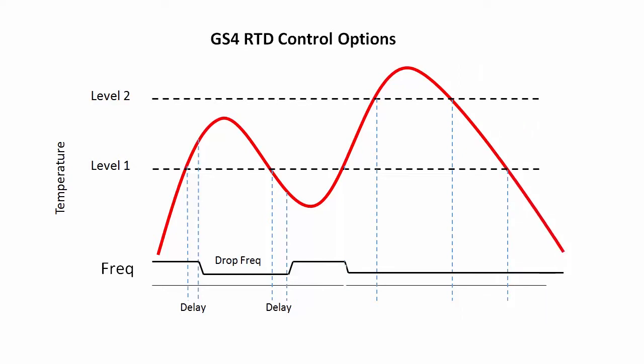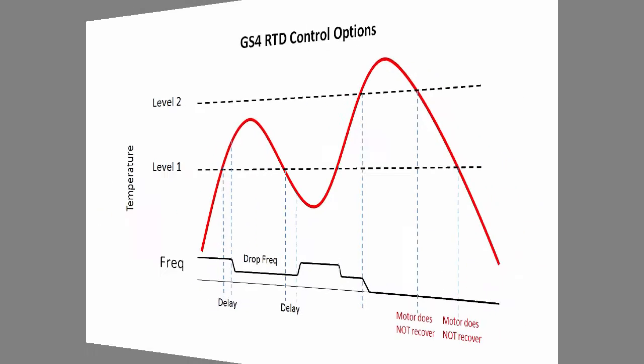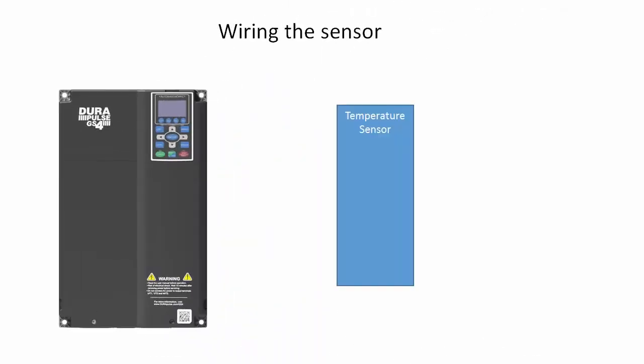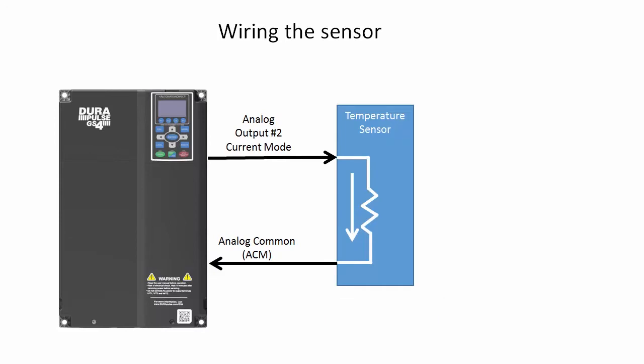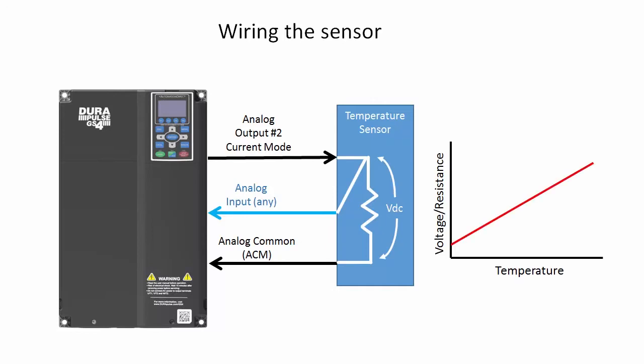Let's do an example using an RTD so we can see how this works. For both types of temperature sensors, connect the device to analog output number 2. Because it can be set up as a true current source that can drive a fixed current through the sensor to create a voltage we can measure with an analog input. And since the resistance changes with temperature, the voltage we read will be proportional to that temperature. You can use any analog input. We'll use input number 3 for this example.